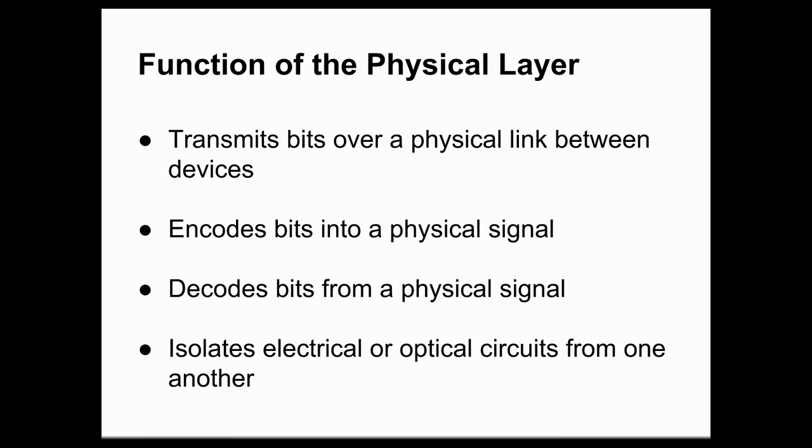The purpose of the physical layer is to transmit bits. In other layers we talk about frames, packets, and other data structures, but at the physical layer we're concerned only with transmitting bits between physical machines and different devices on the network. The physical layer's job is to take a stream of bits from one device, encode them into a physical signal, send them over a wire or over a radio, and then decode those bits from the physical signal at the other end.